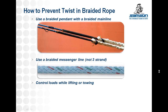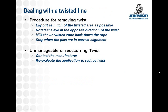Preventing twist is usually easier than removing twist from a line. However, if a line has been twisted, it is possible to remove the twist before it gets too bad. Lay out as much of the twisted area as possible on a flat surface. Grab the eye and manually flip it over in the opposite direction of the twist. While doing this, it's important to milk the untwisted zone back down the length of the rope, continuing to push the untwisted zone down so you can see how much twist remains. Keep doing this until all the twist has been removed and the picks are once again in a straight line.